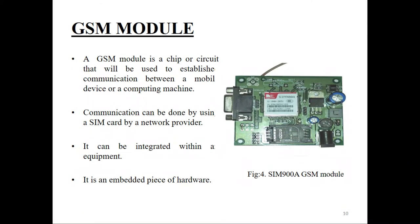Insert a SIM in the SIM tray. Connect the antenna pointing outward from the GSM module. Connect the ground of the GSM module to the ground of the Arduino. The TX pin of the GSM module is connected to an Arduino digital pin, and the RX pin is also connected to an Arduino digital pin. The GSM module needs an external power supply of 12V 2A. The SIM900 GSM module uses an ARM926EJ-S processor for phone and data communications.